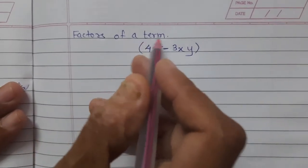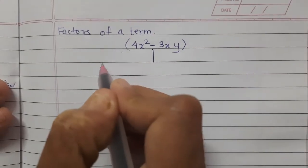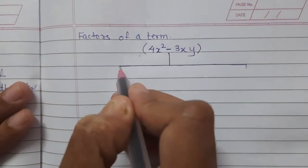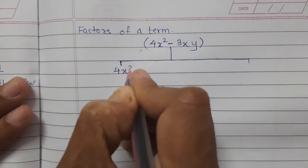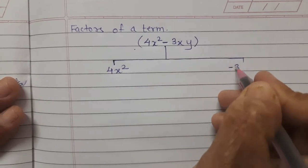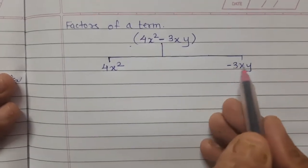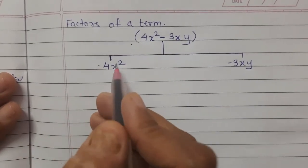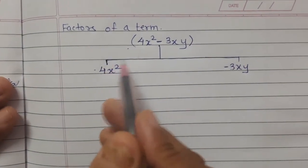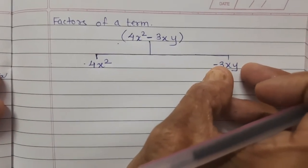Let's learn now factors of a term. Consider the expression 4x squared minus 3xy. Here 4x squared is one term and minus 3xy is another term. Now let's find the factors for each term.